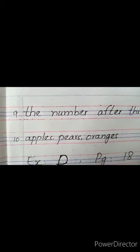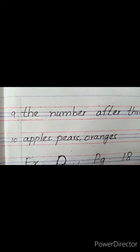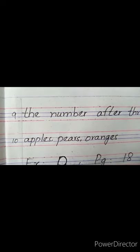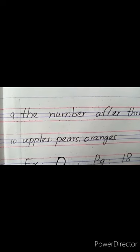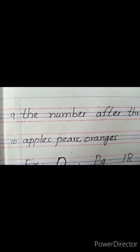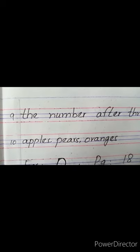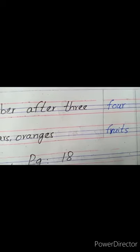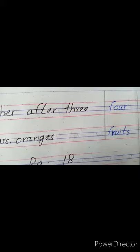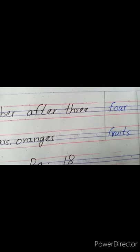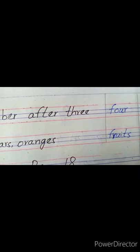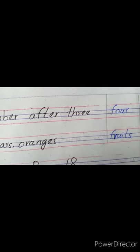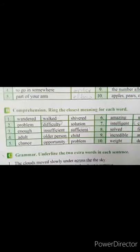Tenth and last one is 'apples, pears, oranges' — یہ سب چیزیں جو F سے start ہوتی ہیں — ان سب کو کیا کہتے ہیں — these are called 'fruits' — F-R-U-I-T-S. Started with F.